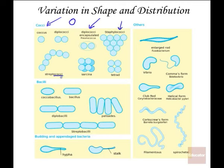Bacilli is another word for rod. These rod-shaped bacteria can be arranged singularly, in chains, or in structures called palisades, and also at angles from one another. We can also have budding and different kinds of appendages. There are vibrio shapes, which are like commas, as well as corkscrew forms and filamentous forms.